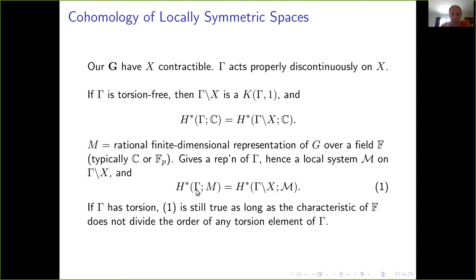This statement is still true when gamma has torsion as long as the characteristic of F doesn't divide the order of any torsion element of gamma. Much of what I'm doing today is for SL_4, where in SL_4(Z) the torsion elements have order divisible by 2, 3, or 5 — so those are the interesting primes today. I won't always avoid the primes 2, 3, and 5; there'll be an appendix in the slides dealing with those cases, but mostly I'll be looking at primes away from 2, 3, and 5, or in characteristic 0.